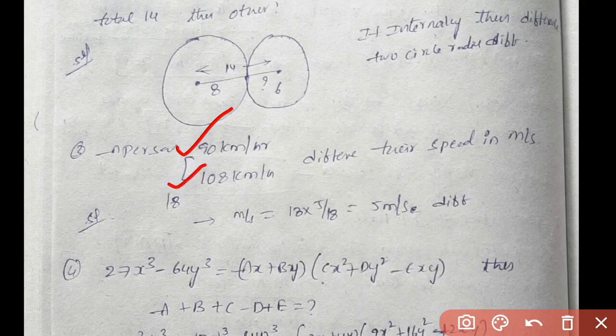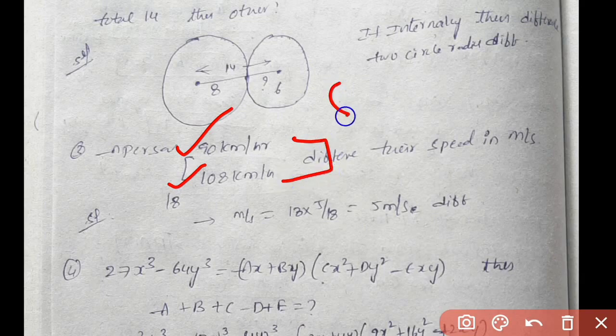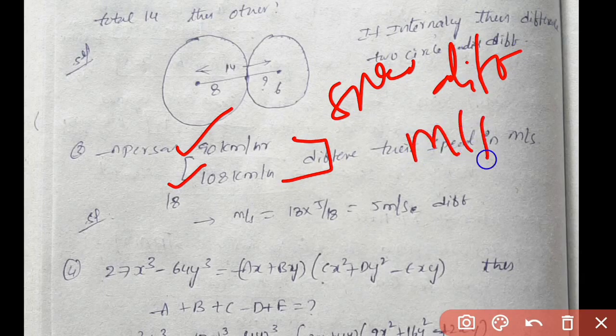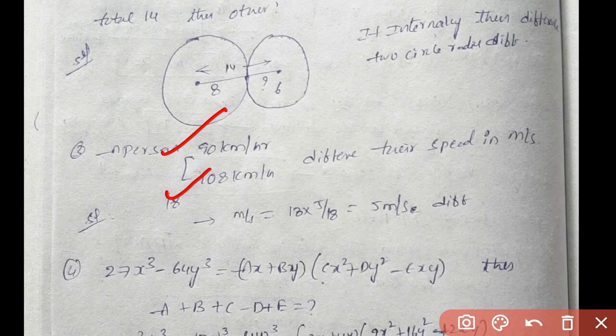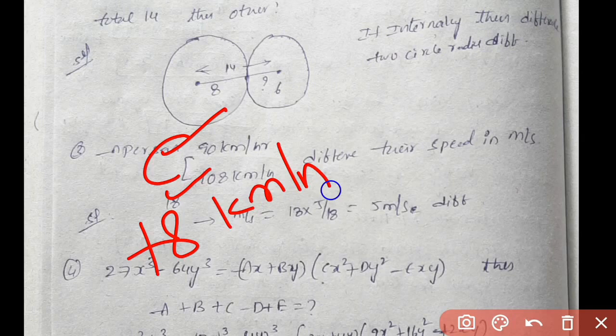Speed problem: one person 90 km per hour average, another 108 km per hour. Speed difference in meter per second. One person 90 km, other 108, difference is 18. Convert 18 km per hour into meter per second: multiply by 5/18. Answer: 5 meter per second.